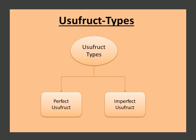There are two types of usufructs. One: perfect usufruct — in a perfect usufruct, the usufructuary is entitled to use the property but cannot substantially change it. Two: imperfect usufruct — where the usufructuary gets some ability to modify the property.